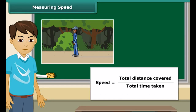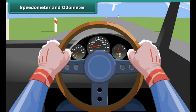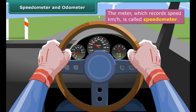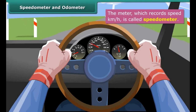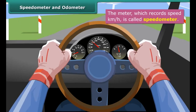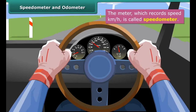To measure the speed of an object, we measure the distance covered and the time taken to cover that distance, then apply the formula of speed. Here is a simple exercise: draw a line and ask a friend to stand on it. Allow him to run until he wants to stop. Note the total time taken from the moment he started to the moment he stopped. Measure the distance covered by your friend. Now divide the distance covered by the time taken. What you have calculated is the running speed of your friend.